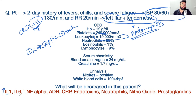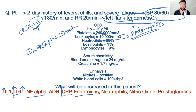Interleukin-1 levels will be high because they are elevated in septic shock. Interleukin-6 levels will also be high, TNF-alpha will be high, CRP is increased, and endotoxins are increased because gram-negative bacteria are the primary culprits. What is the most common organism causing septic shock here?